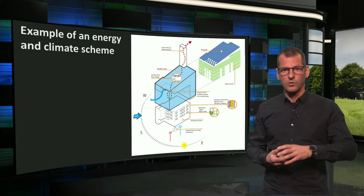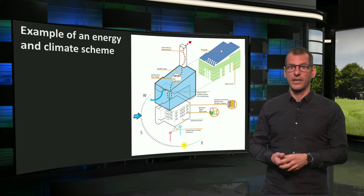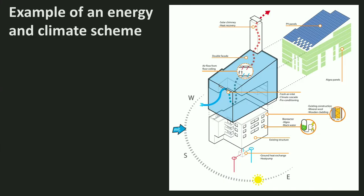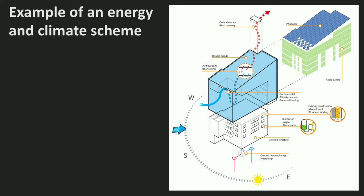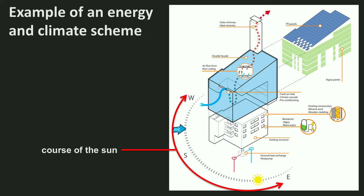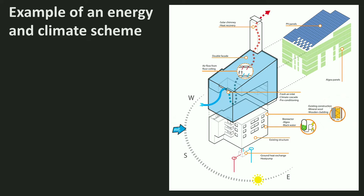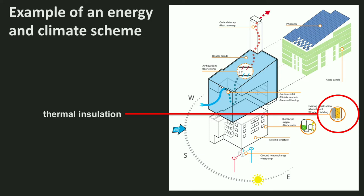Here you see a climate and energy scheme of a student who already did a redesign of an existing building. At first, it may look like chaos, but I will guide you through step by step. Here you see the original building that the student worked on. The student drew the course of the sun in this part of the world — it is the azimuth only, but the altitude of the sun should also be understood. As part of step one, reduce, the student proposed a post-insulation scheme of the original facade.